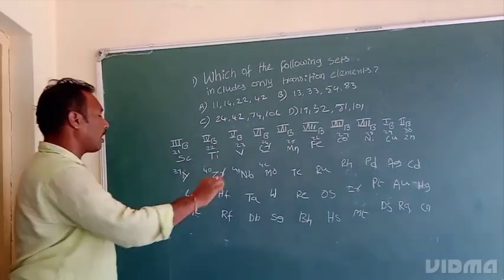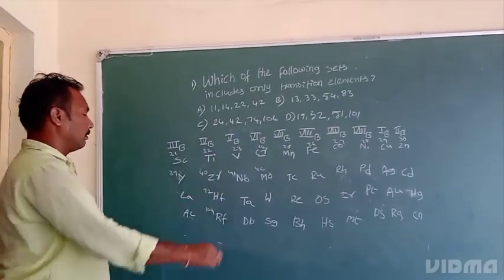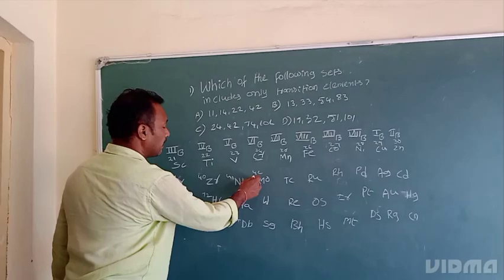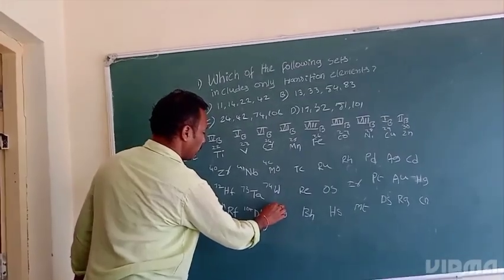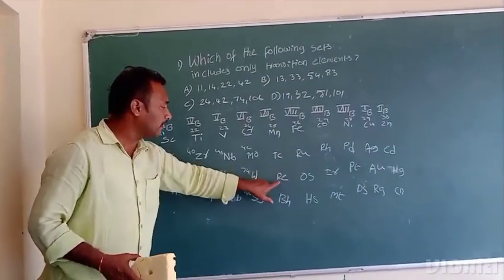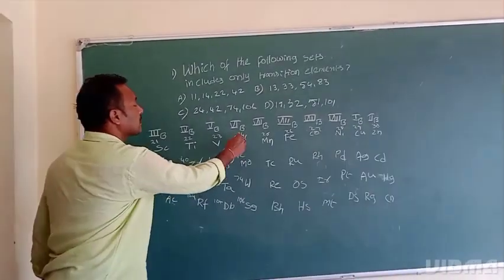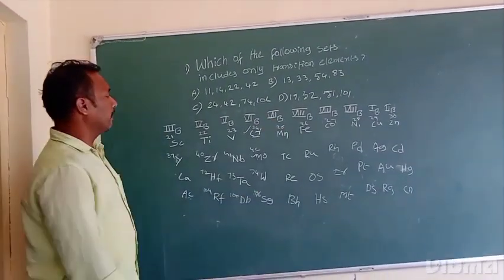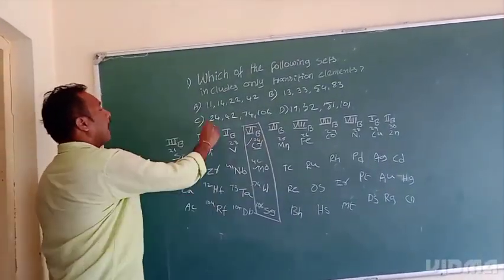Hafnium atomic number is 72. Within this series, atomic numbers: 25, 24, 42, 42, 74. So 6B 3 transition series and option C is correct.